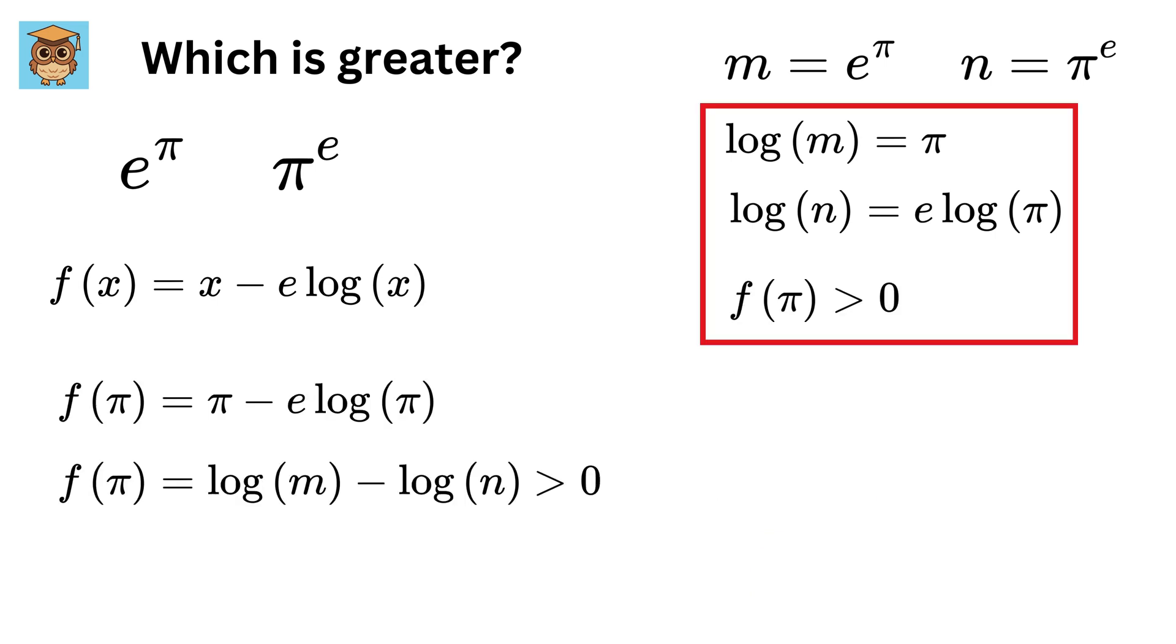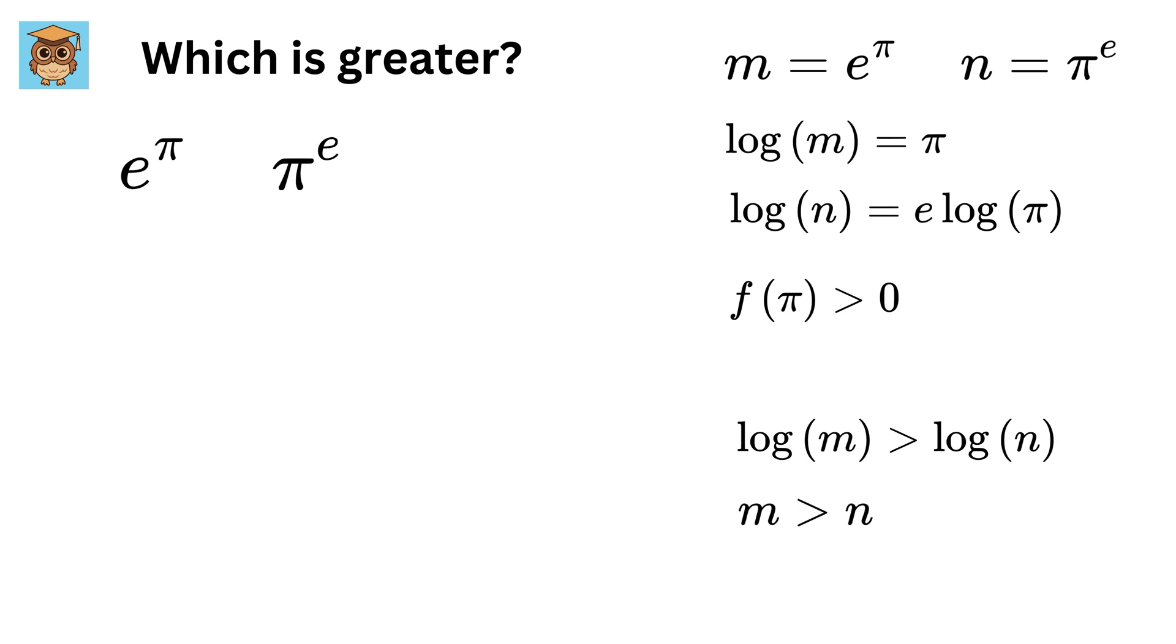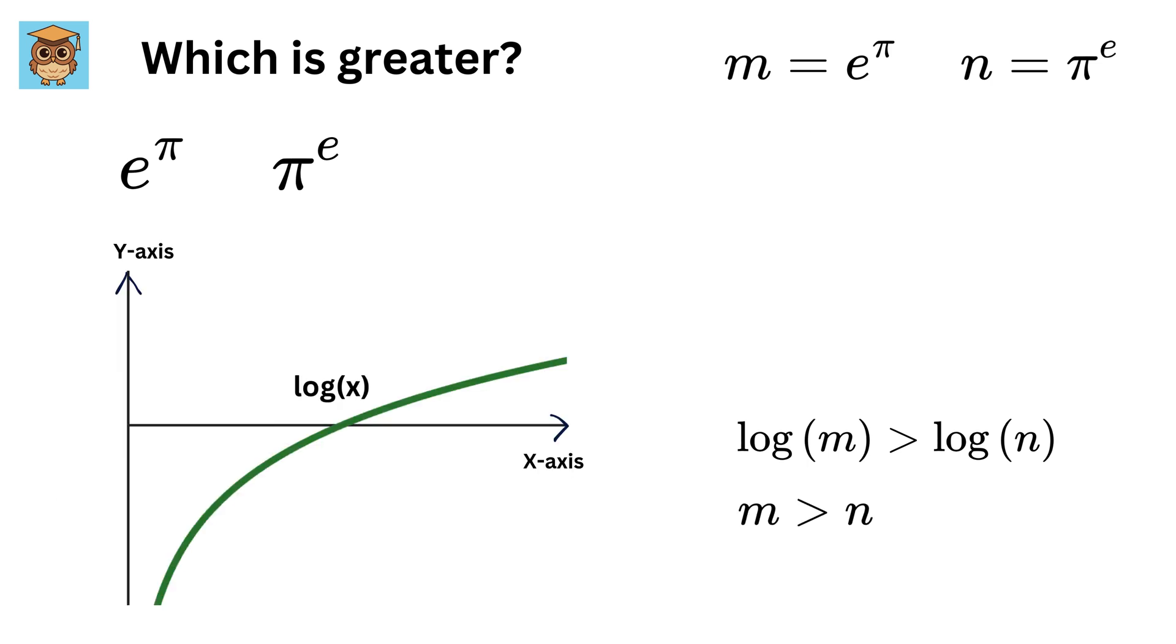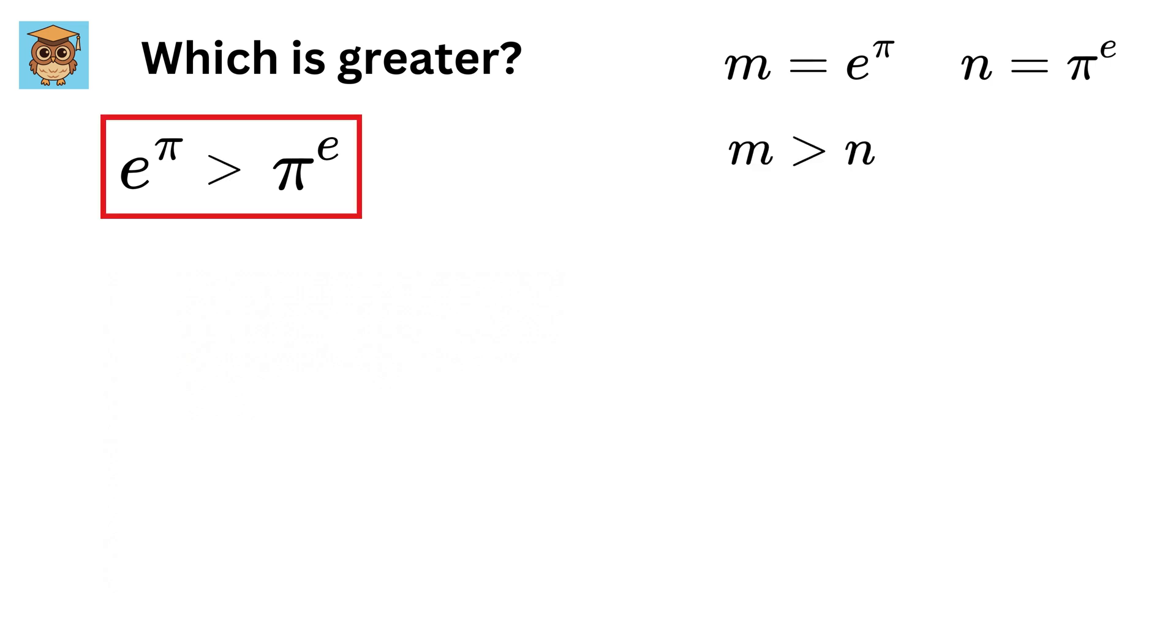This is the same as log(m) minus log(n). So log(m) will be greater than log(n), or in other words m will be greater than n since the natural logarithm is a strictly increasing function. Thus we get e raised to π will be greater than π raised to e.